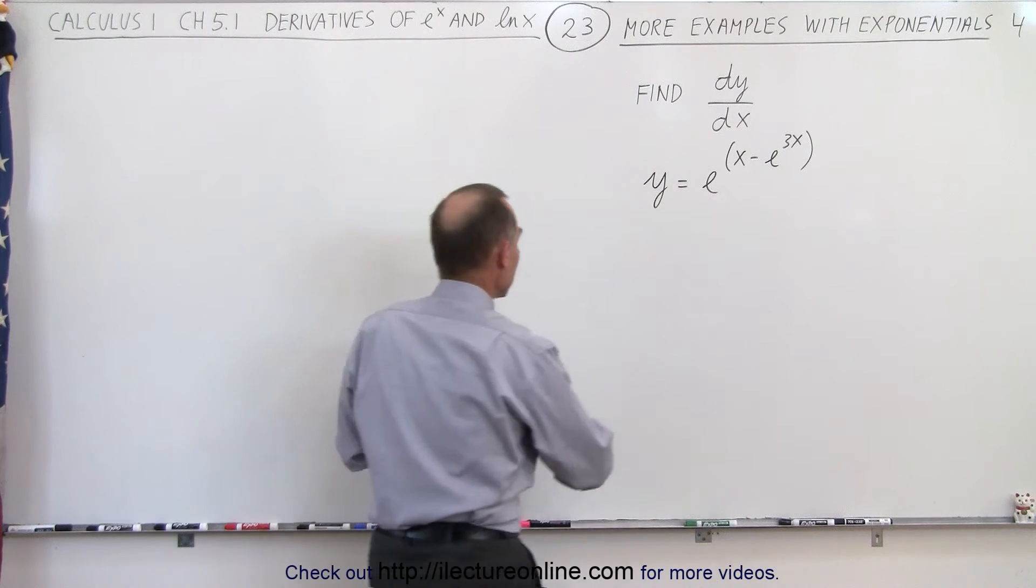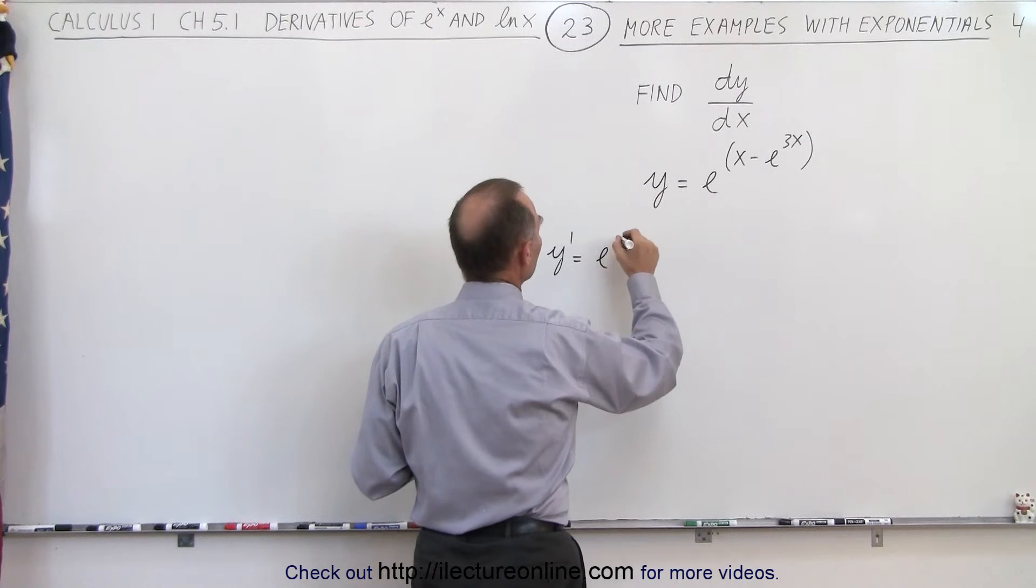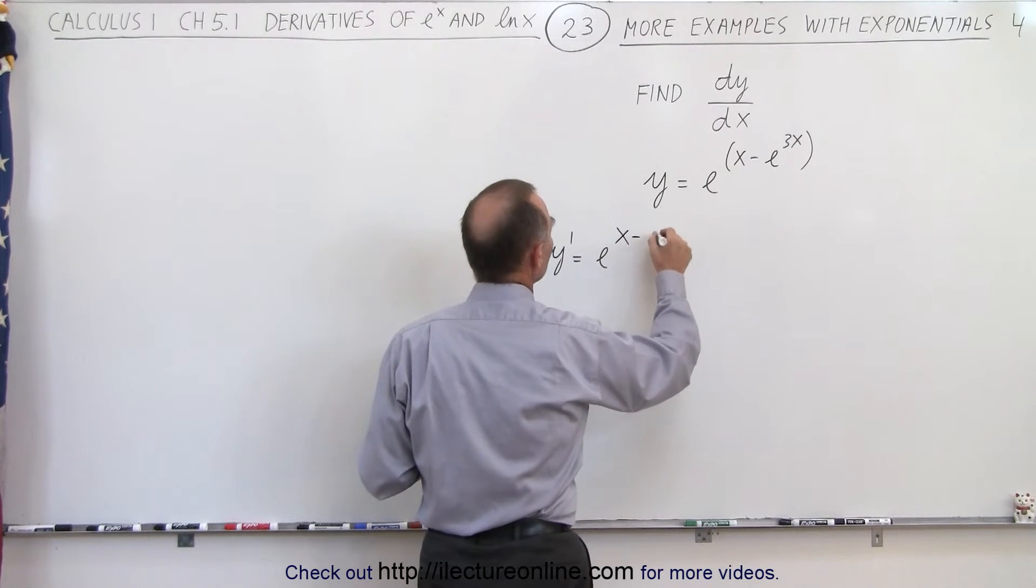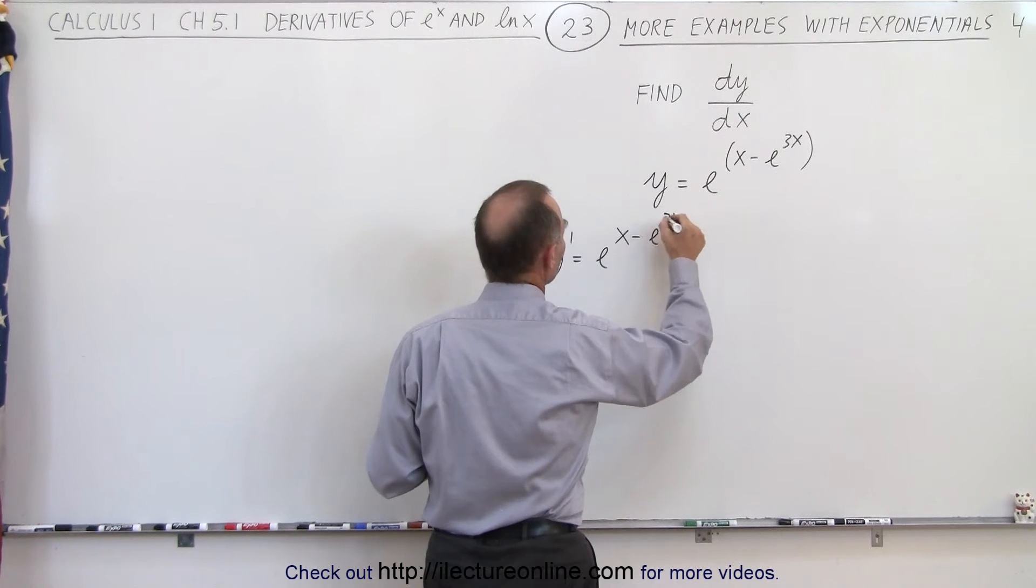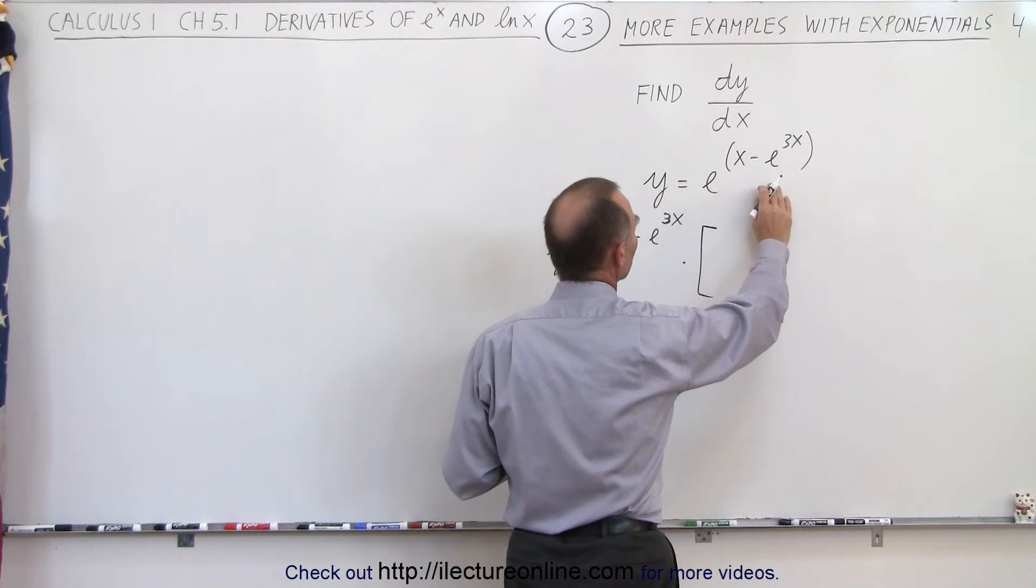So we're going to use a technique that y prime is equal to e raised to the x minus e to the 3x power—should be a 3 right here—times the derivative of the exponent.